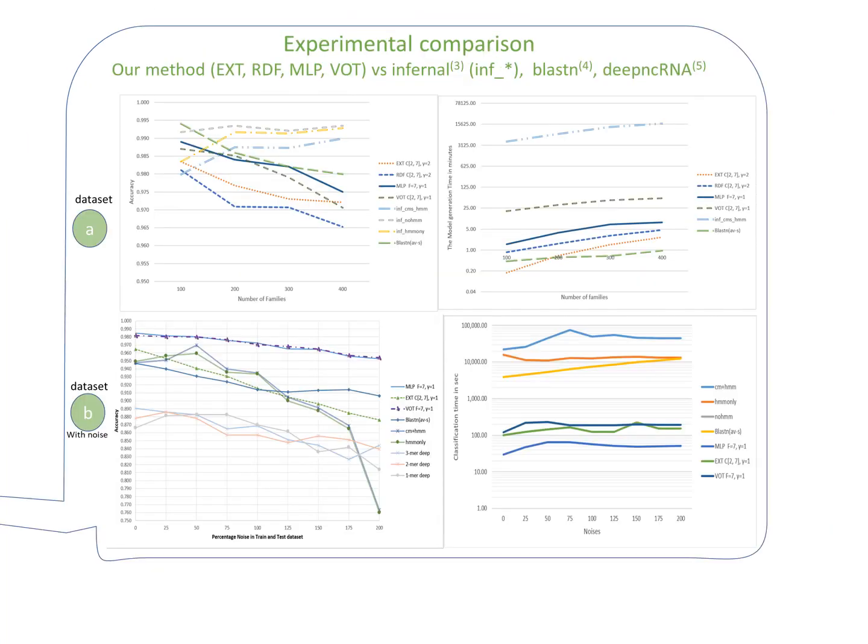To evaluate our model, we use two datasets based on Rfam database. And we compare against Infernal tool based on covariance model and HMM with its three variants, BlastN based on the best hit, and the deepncRNA tool based on k-mer represented by one-mer, two-mer, and three-mer in this experiment.